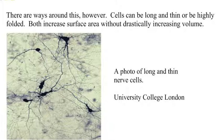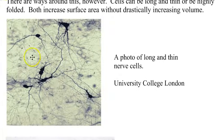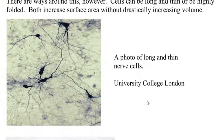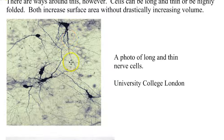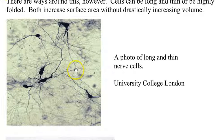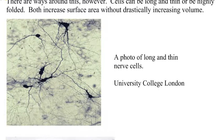There are ways to cheat, and cells do this all the time. One thing is that a cell can maximize its surface area by being really long and thin. Here's a picture from University College London — these are actual nerve cells, or neurons. You can see all these squiggly cells here. By being really long and skinny, you get maximum surface area per volume.